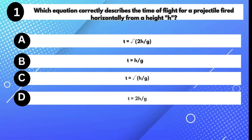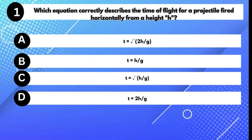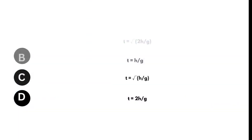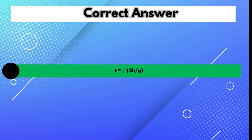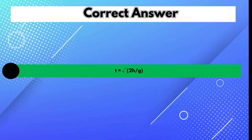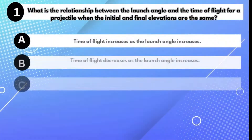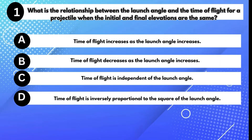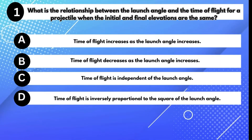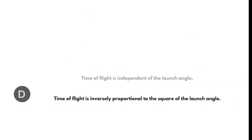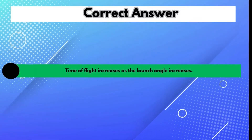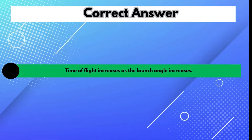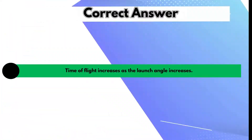Which equation correctly describes the time of flight for a projectile fired horizontally from a height h? Answer A: T equals the square root of 2H/G. What is the relationship between the launch angle and the time of flight when initial and final elevations are the same? Answer A: Time of flight increases as the launch angle increases.